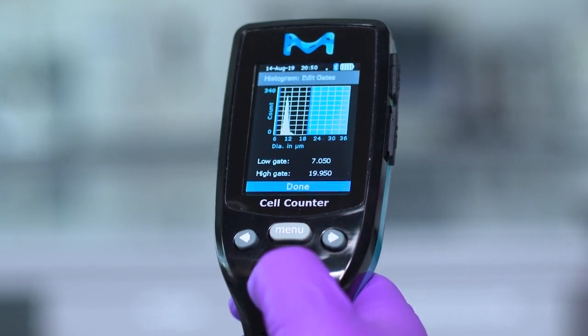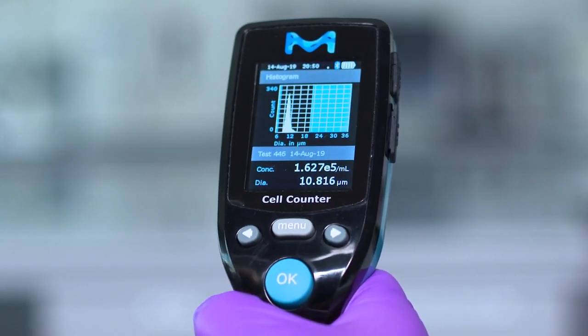Move selector to done and press OK to return to see the newly gated histogram. The new generated concentration and diameter values are shown.